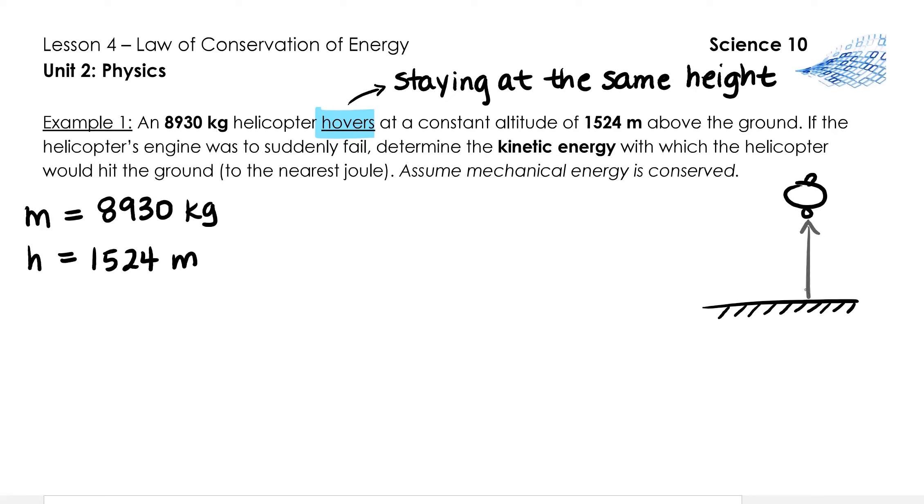Hovers means that it's staying at a constant altitude or staying at the same height above the ground. In this case, that height is H, 1,524 meters. If the helicopter's engine was to suddenly fail, determine the kinetic energy with which the helicopter would hit the ground. We are looking to find the kinetic energy upon impact, or EK final. Assume mechanical energy is conserved. This releases us from our responsibility to account for friction. We're always going to assume this in Physics 10. We need to start by writing the formula that includes kinetic energy final. You'll also notice this is a problem that involves change. Initially, the helicopter is hovering in the air, and then we assume that it falls, so the final situation will be right before it hits the ground.